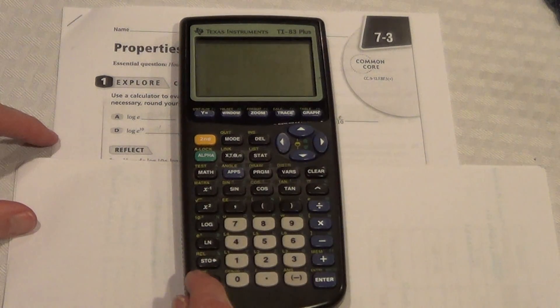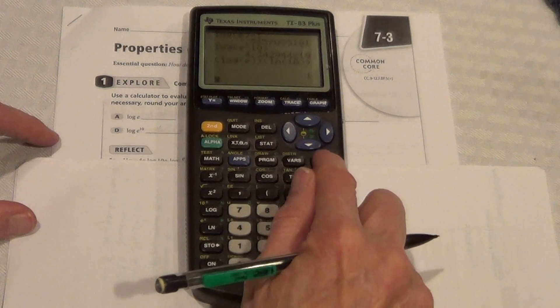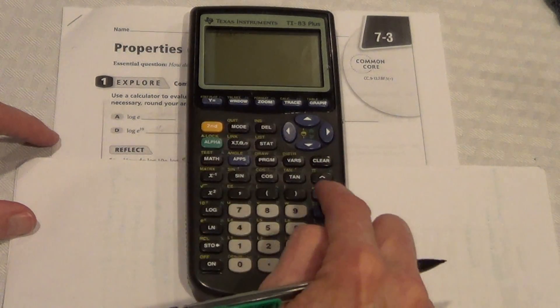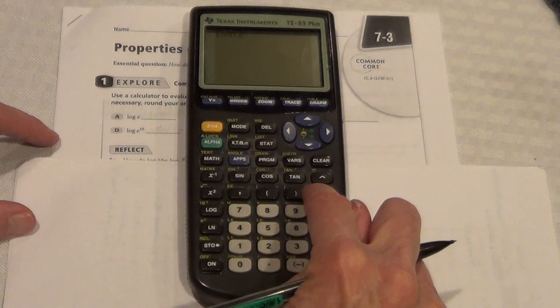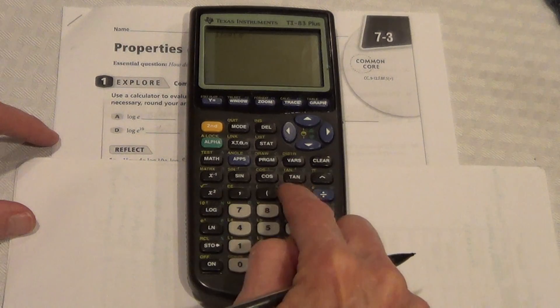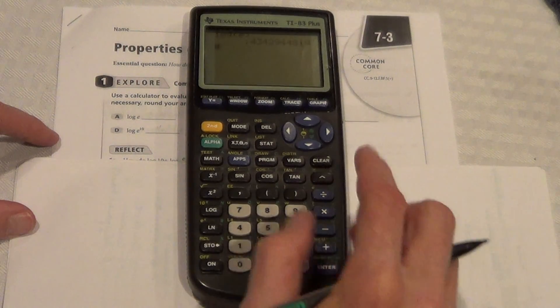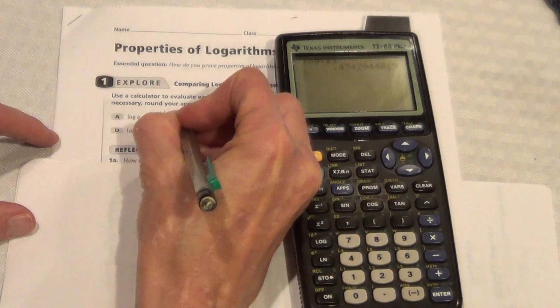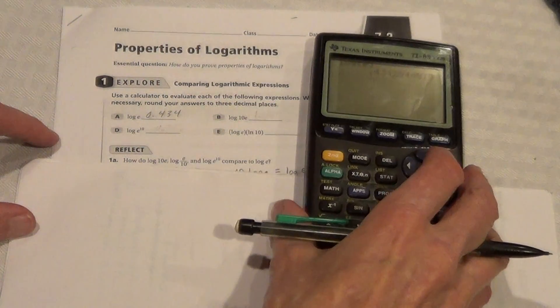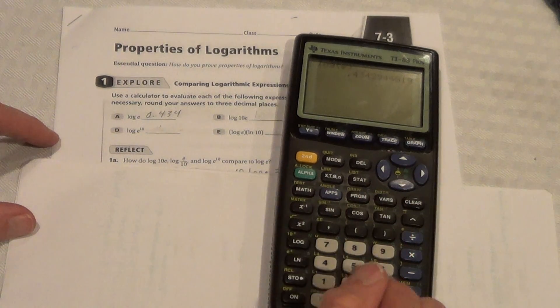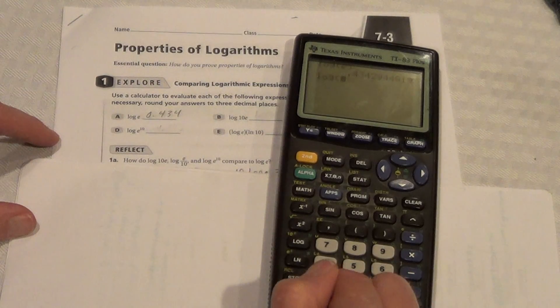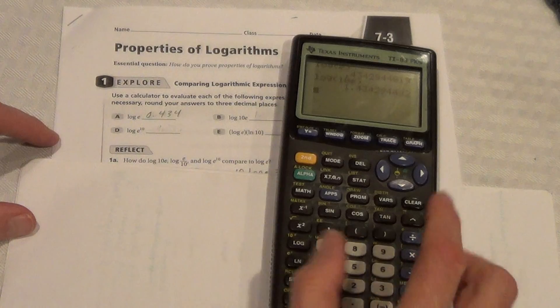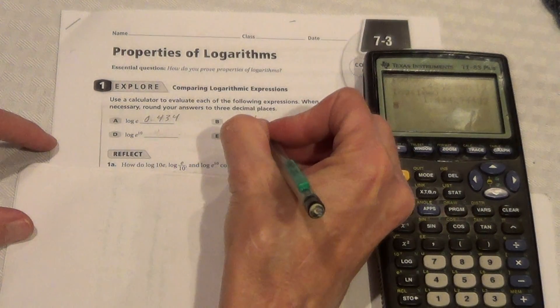Log e, you would plug in, turn it on first, and go clear, log, and it will be second divided sign. You can see the second turns it to yellow, and the yellow is the e, just in case yours is different. Close the parenthesis, and we get 0.434. So then right here, we go log 10e, and we find that it's 1.434.